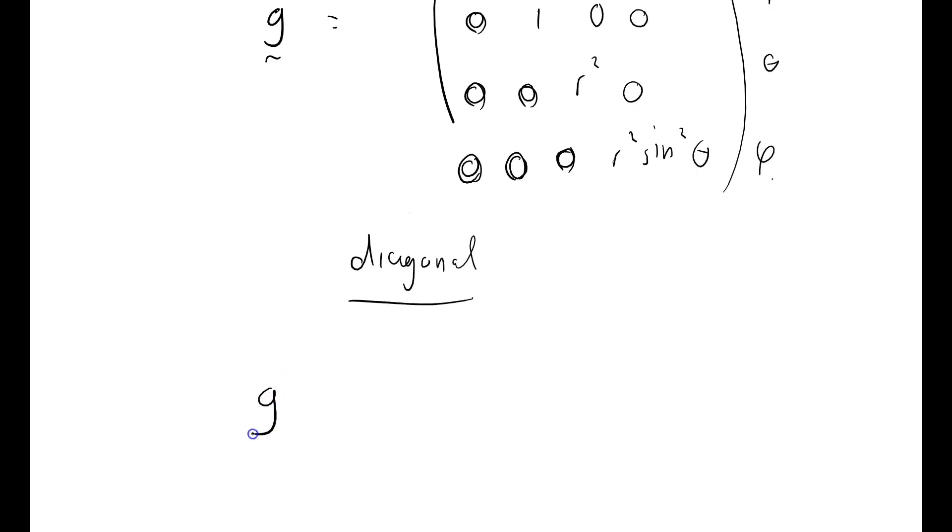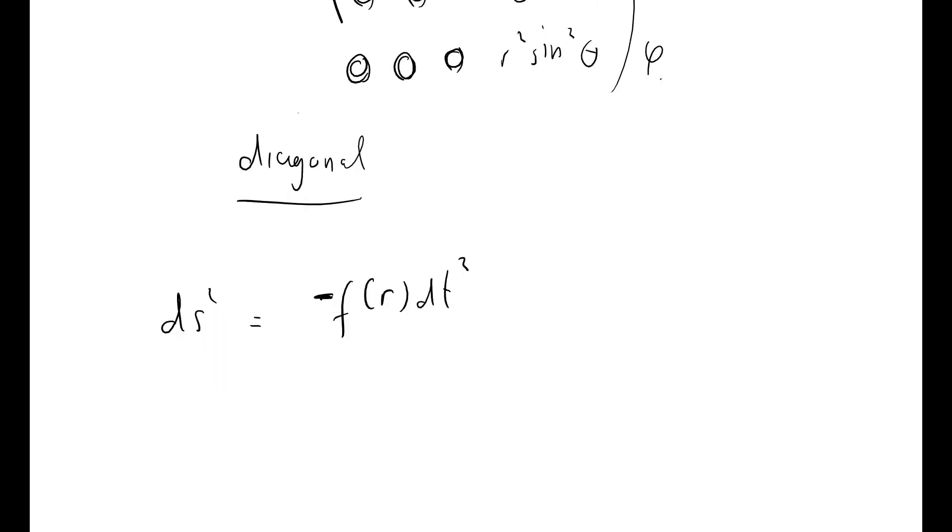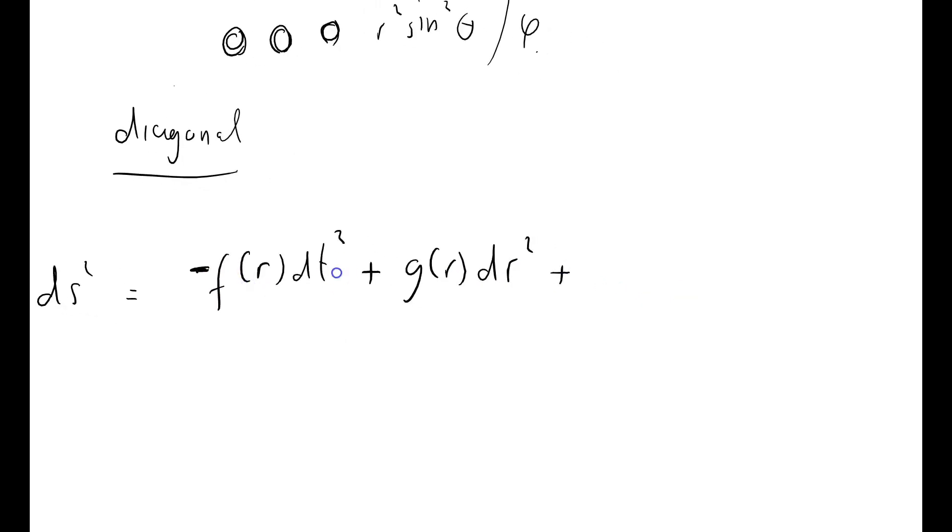And I'll show you the system I'm going to consider. I'm going to consider a line element, ds squared, equals some function of R times dt squared, and it's negative just so I can keep track of whether things are time-like or space-like, plus another function of R, dr squared, plus r squared d theta squared, plus r squared sine squared theta d phi squared.